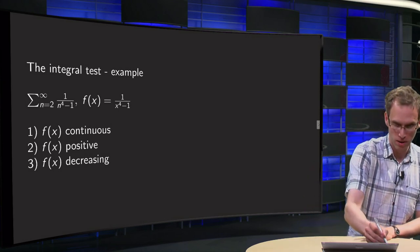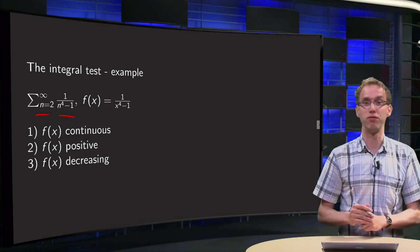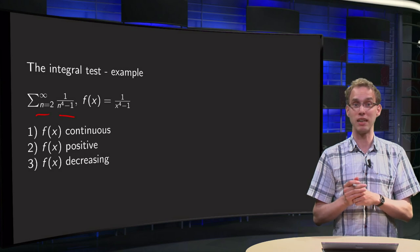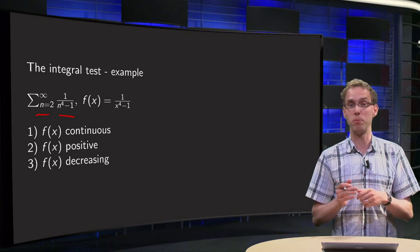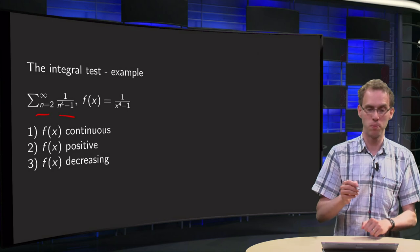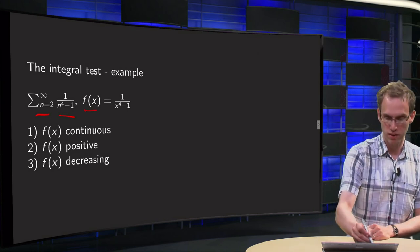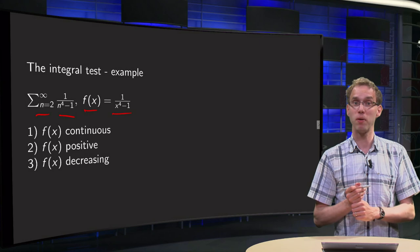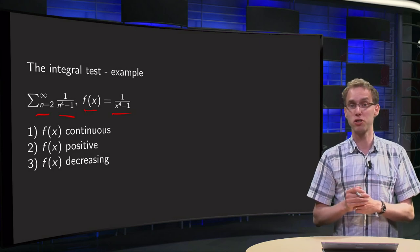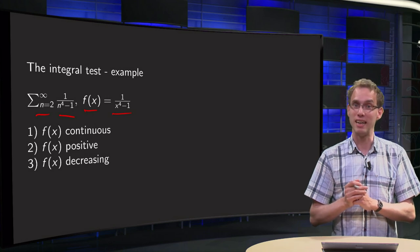We start to sum at 2 the series 1 over n to the power of 4 minus 1. We start to sum at 2 because we cannot start at 1, because then our first term would be infinite. We have our f(x) equals 1 divided by x to the power of 4 minus 1, and we wonder whether our series is convergent or divergent, so we will try to apply the integral test.